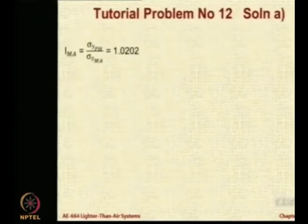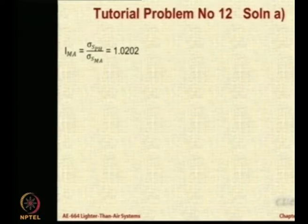So let us see. Now IMA is going to be the ratio of the two sigmas. So it is going to be sigma S pH by sigma S MA, 1.0202 that is the value. So those of you who do not have the calculator, you can follow the calculations with me. Otherwise, you will stare at the screen and say yes, but you will not understand.